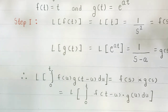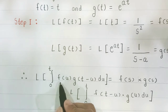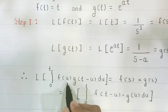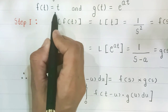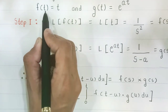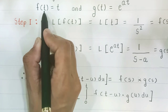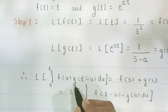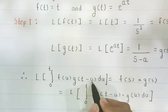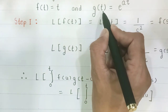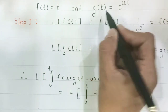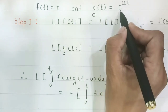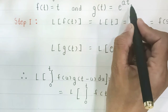In Step 2 we replace the t parameter by u and (t−u). For the integral from 0 to t of f(u)·g(t−u) du: since f(t) = t, we replace t with u to get f(u) = u. Since g(t) = e^(at), we replace t with (t−u) to get g(t−u) = e^(a(t−u)).